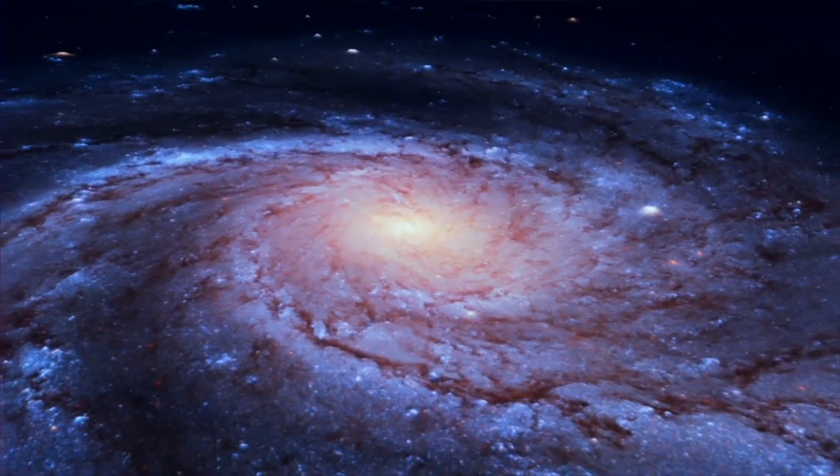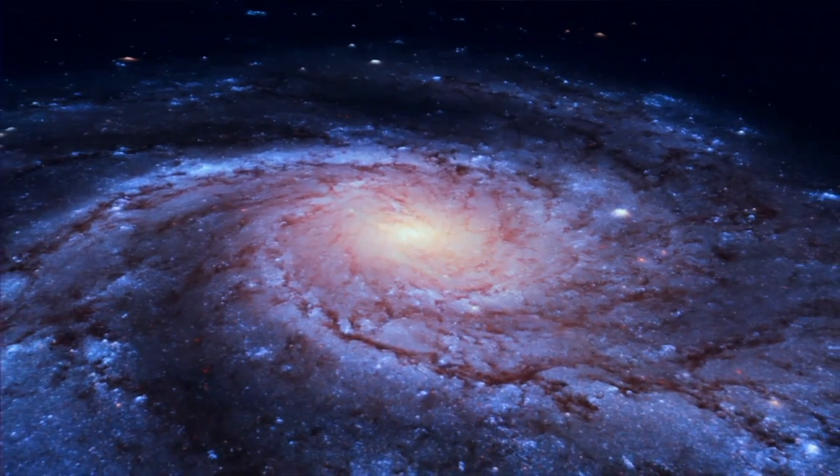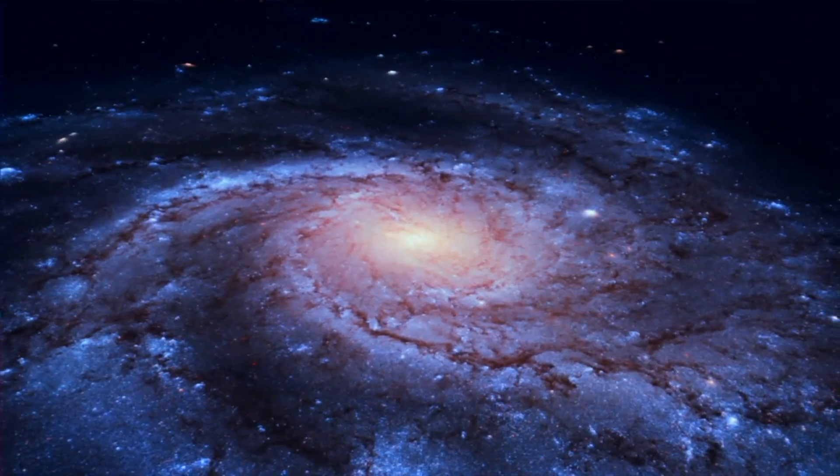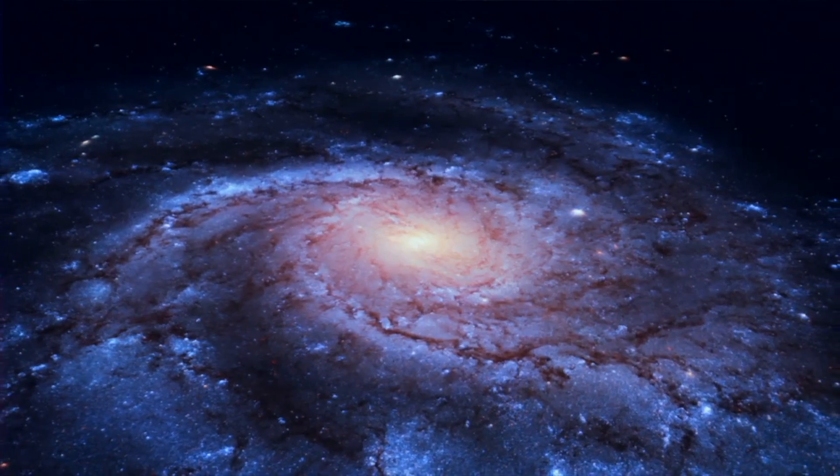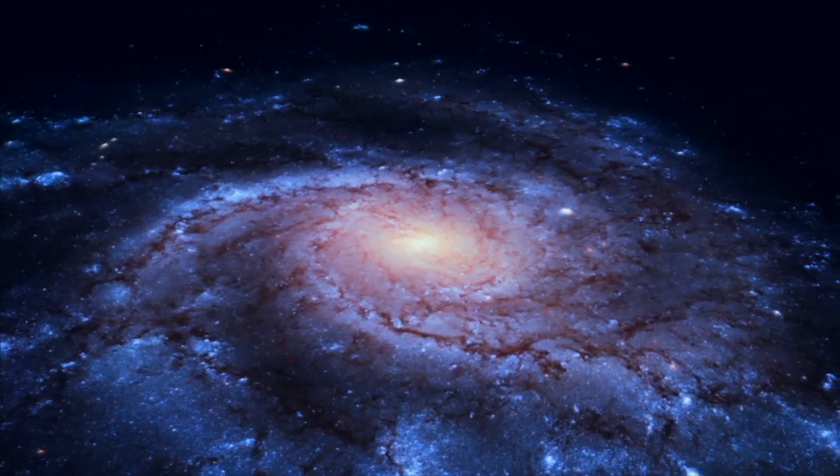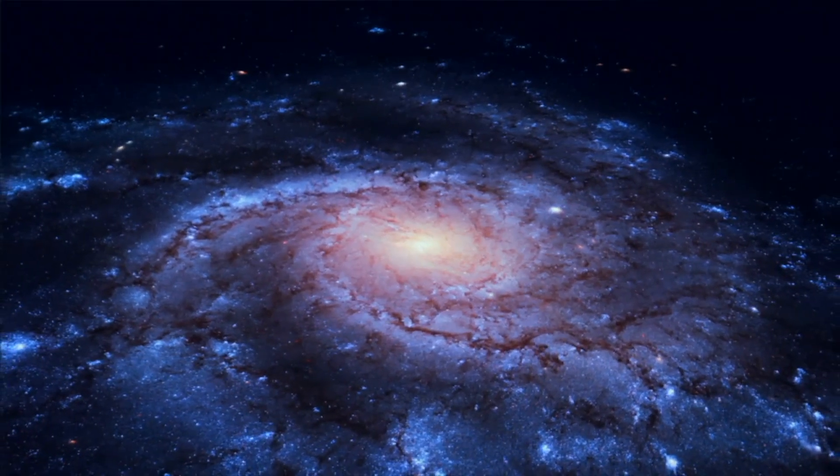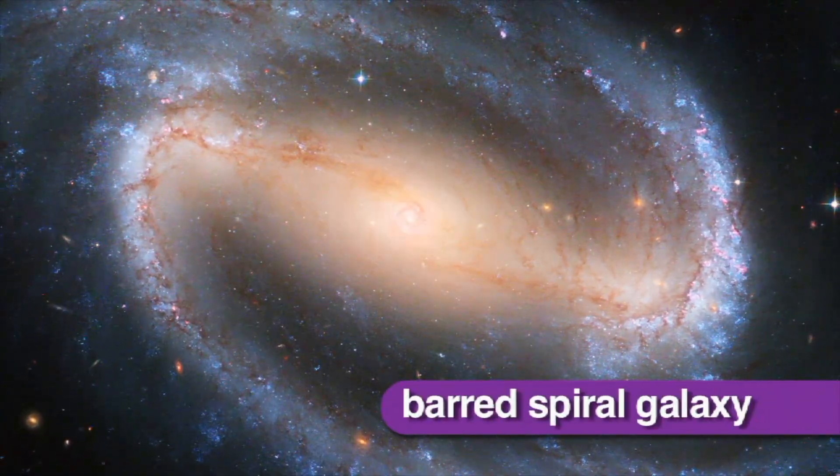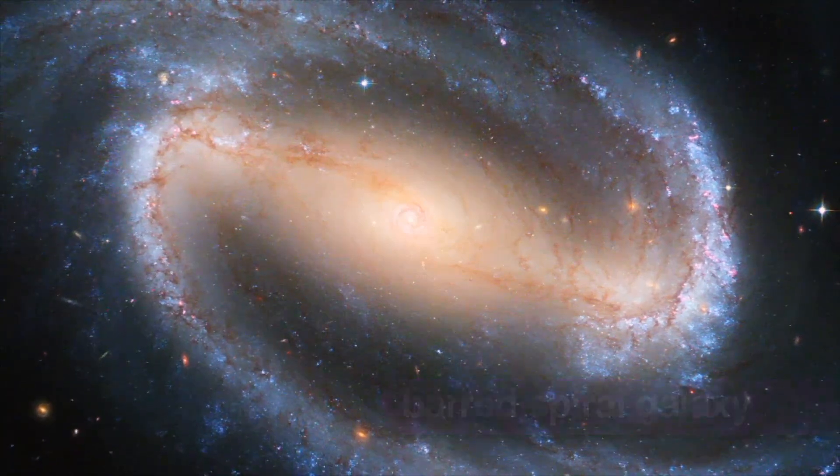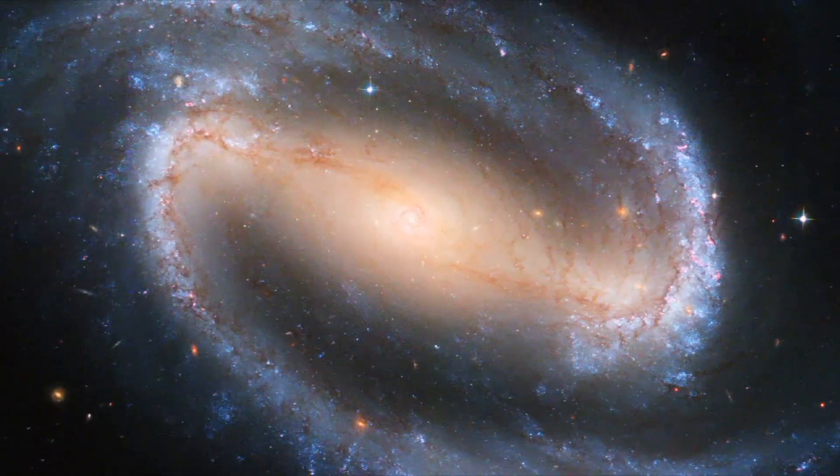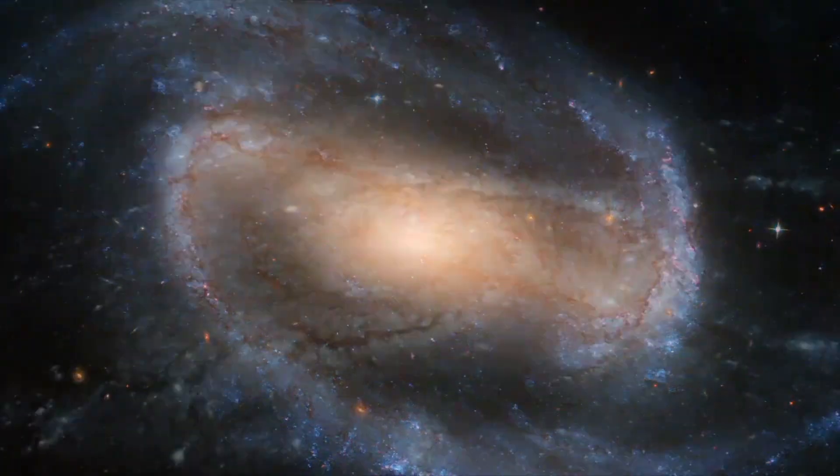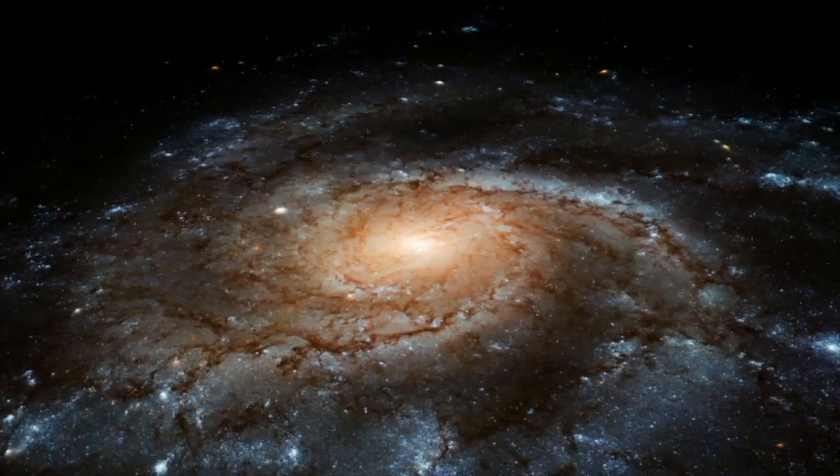Some spiral galaxies have very loosely wound arms, while others have very tightly wound arms. Some, called barred spiral galaxies, have a long bar across the middle with spirals coming off the ends.